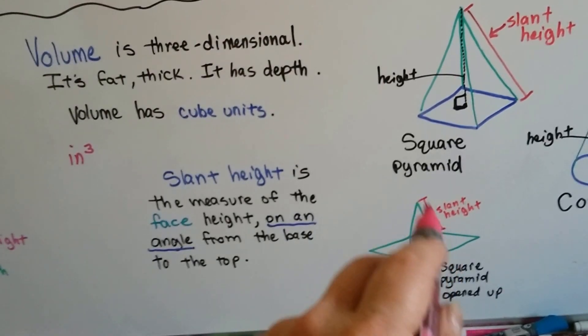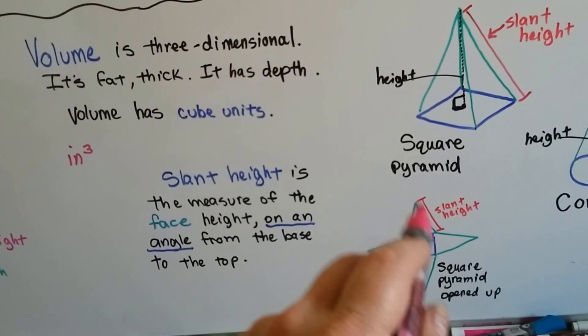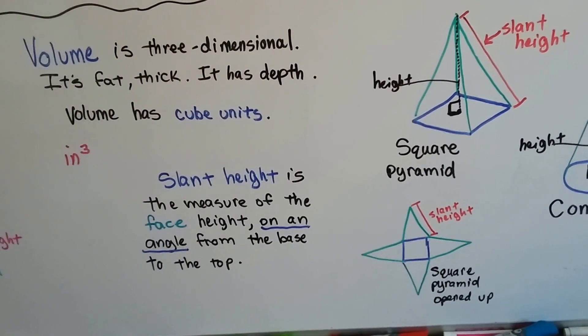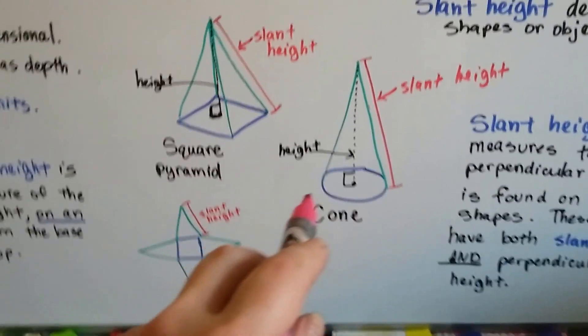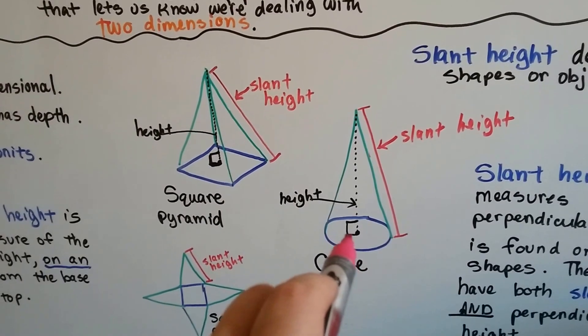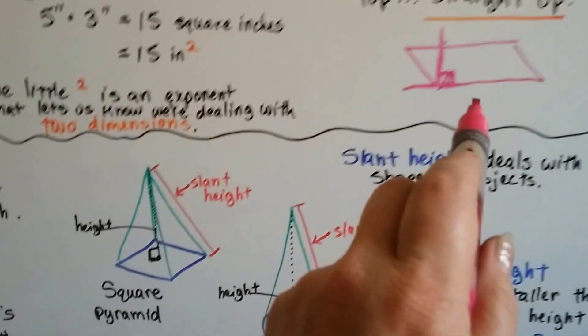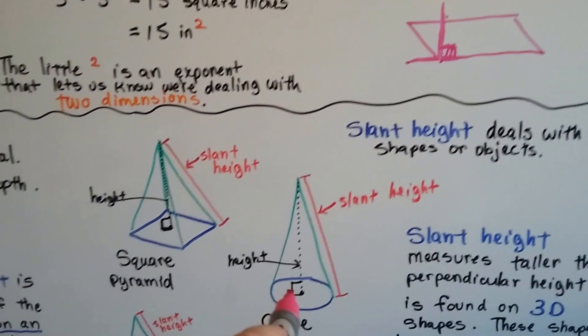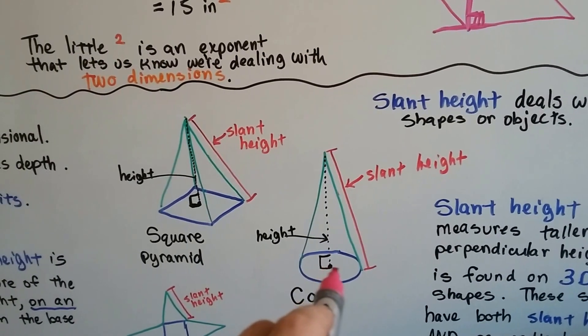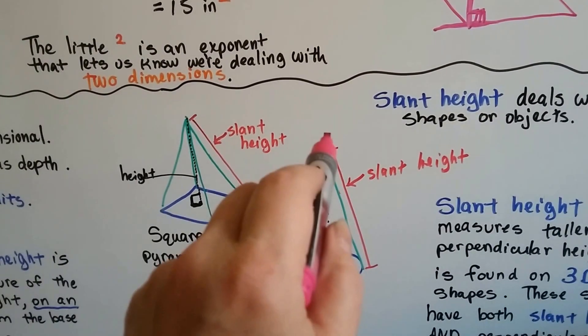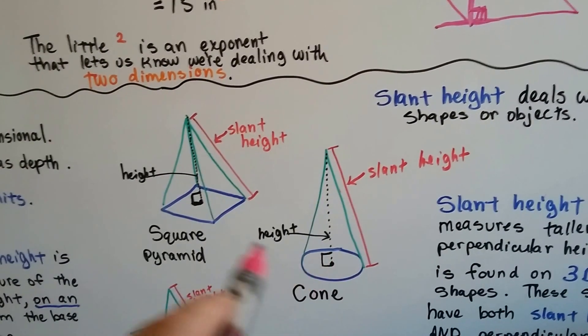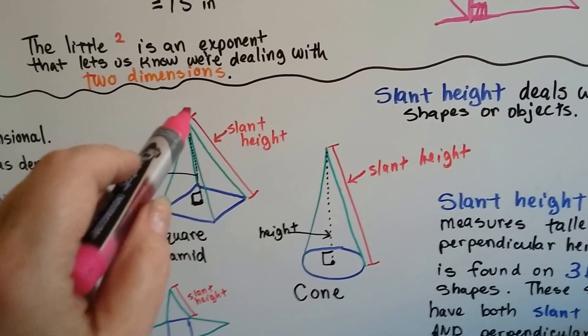Well, that's the slant height. How tall this face is. It's called a lateral face. Even on a cone. And the way to find the regular height is the same way with our parallelogram. You make a perpendicular line going from the flat base straight up. With that 90 degree angle there. Same with the square pyramid. It goes straight up the center.